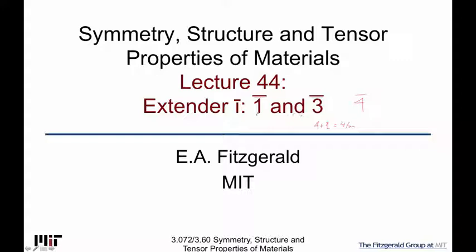We're going to start by looking at cases that we know, doing it by inspection, because you start to realize that as you look at these, some are more complicated. If I just take a 4-fold and add an inversion, I get this 4-over-m thing we've already talked about. But after looking at 3-bar, you start to realize there's one unique structure we haven't been able to triangulate onto in any way, and we're only going to get to it from looking at a 3-bar.